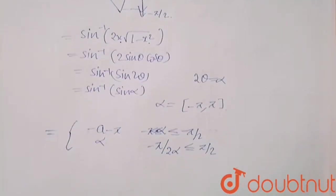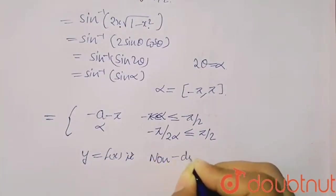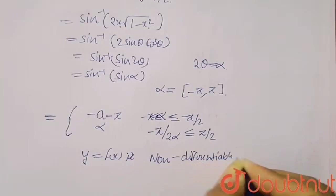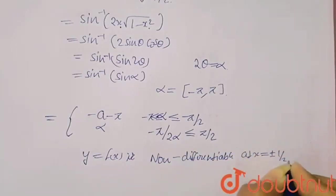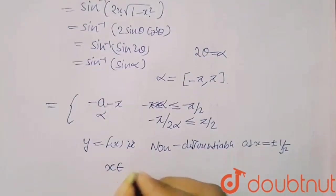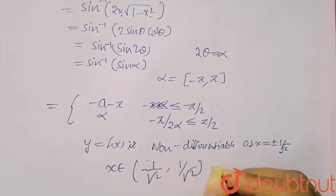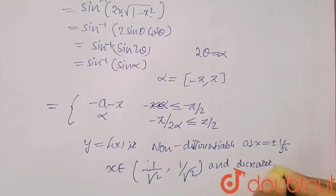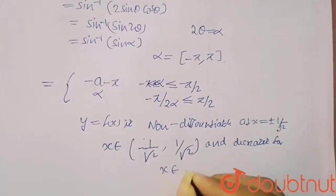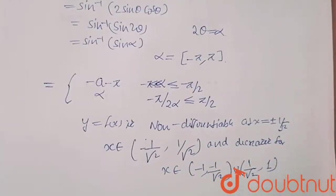The different values will become, so y equals f(x) is non-differentiable at x equals plus minus 1 by 2. Because its value is coming between 1 by 2 type of values. Y equals x increases when x belongs to minus 1 by root 2 to 1 by root 2, and decreases when x belongs to minus 1 to minus 1 by root 2 union 1 by root 2 to 1. This part will be your decreasing part.